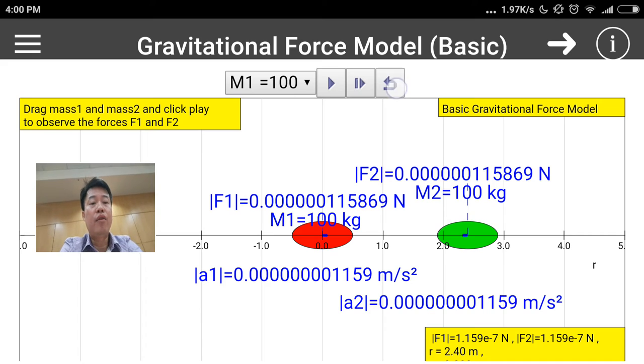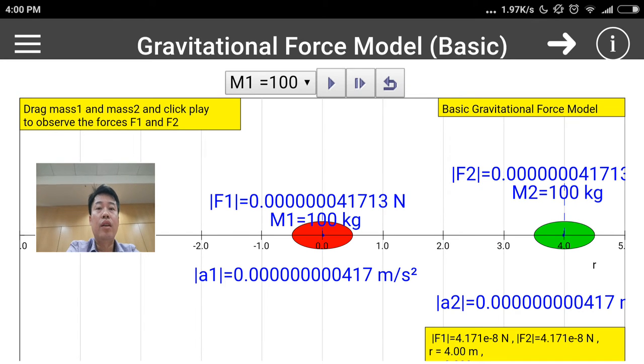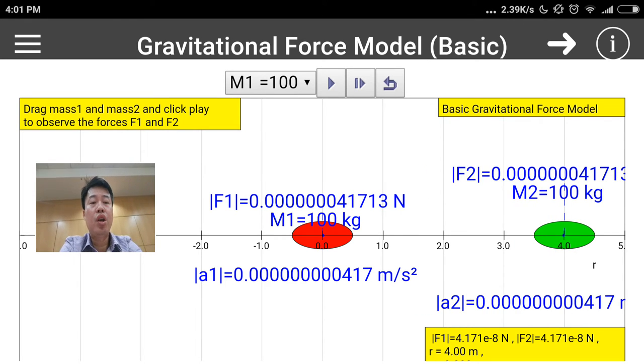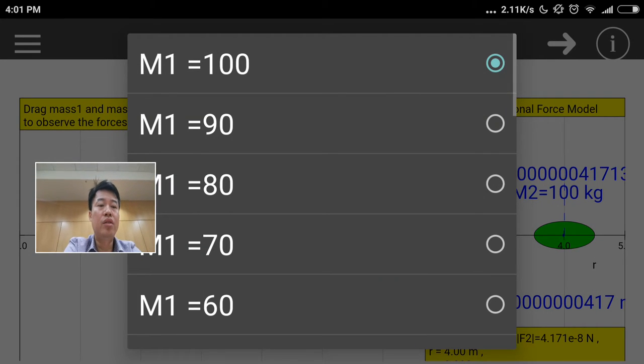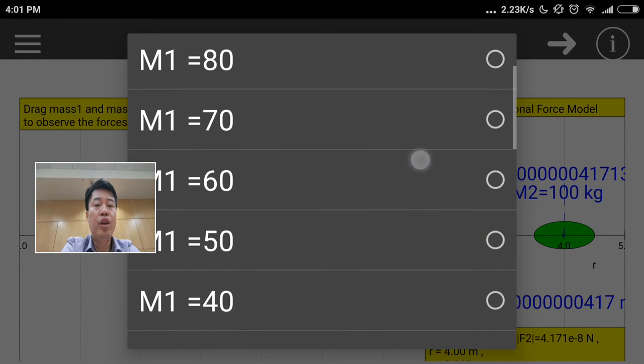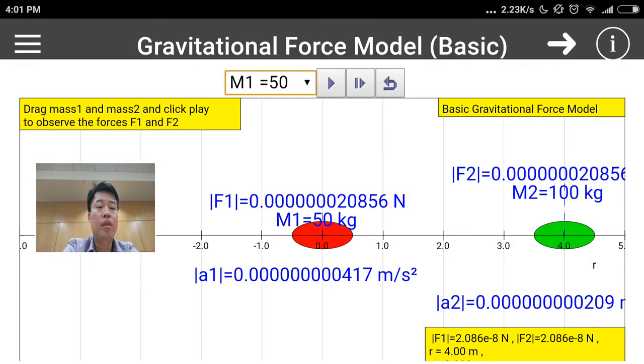There's this particular idea that the mutual force of attraction between these two point masses are directly proportional to the product of their masses. One way to quickly figure this out is you can actually change mass one. From 100, observe that the force is 4.17 to the power of minus 8. If we were to reduce it by half, you can see that the force should now be correspondingly lower, which is also half.